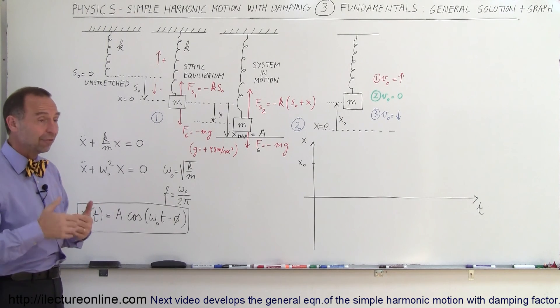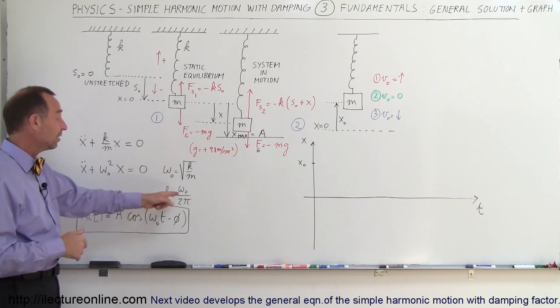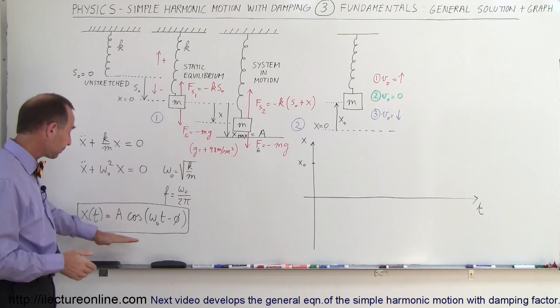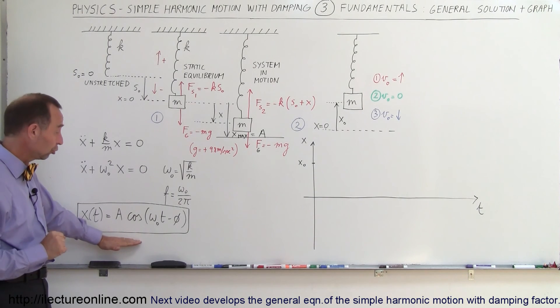So f, being the frequency in terms of cycles per second, is omega divided by 2 pi. This was our general solution to the equation.